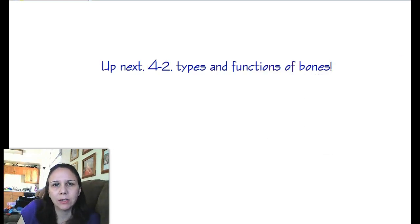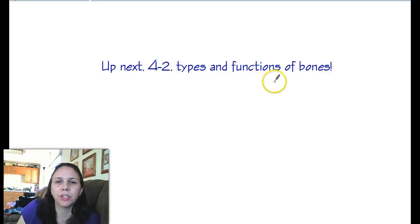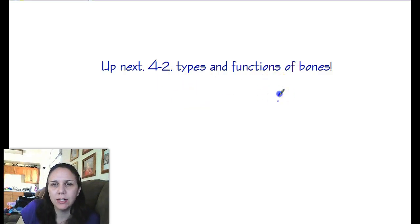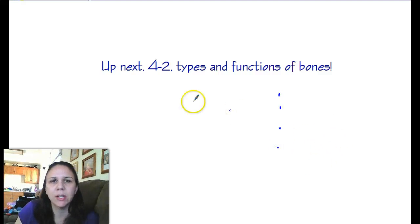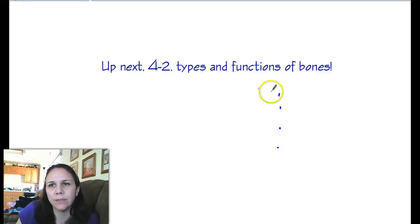Up next is going to be the types and functions of bones. On the very first page it said there were four different types of bones: long bones, short bones, flat bones, and so on. We're going to do that in the next section. Thank you, and we'll talk to you later. Bye.